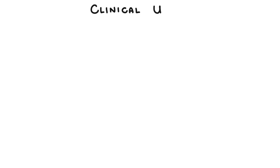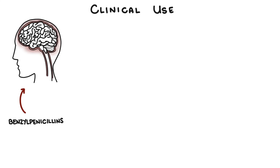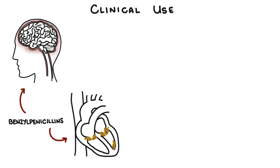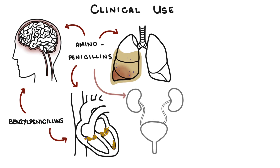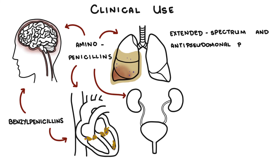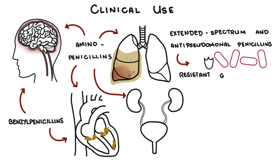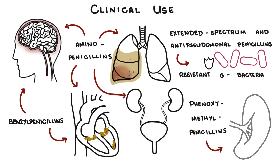Penicillins are used in a lot of infections. Benzyl penicillin is used in infections due to group A and group B streptococci, meningitis due to Strep pneumoniae, neisserial meningitis, streptococcal and enterococcal endocarditis, and neurosyphilis. Aminopenicillins are used in respiratory tract infections, endocarditis, and meningitis. Extended spectrum and anti-pseudomonal penicillins are used in infections due to resistant gram-negative bacteria. Phenoxymethylpenicillin is used prophylactically to prevent recurrent rheumatic fever or to protect patients without a spleen who are at increased risk of encapsulated infections.